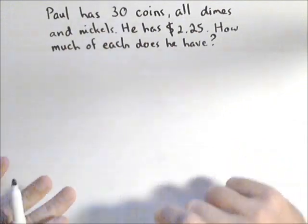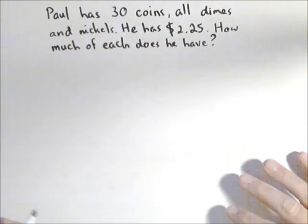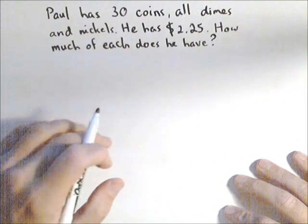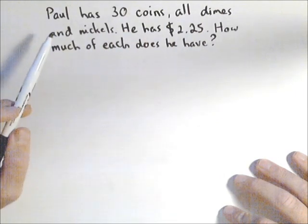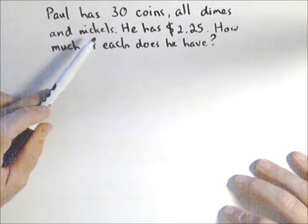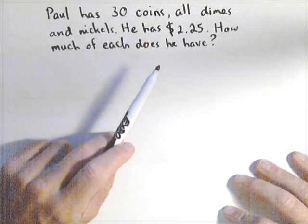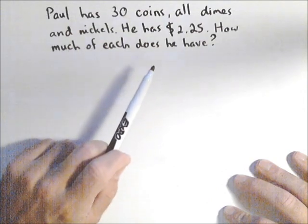So here's a typical problem, a coin problem. This can be done with two types of coins, three types of coins, even four types of coins, but we would need more information in those cases. Let's say Paul has 30 coins, all of them are dimes or nickels. He has a total of $2.25. How much of each does he have?